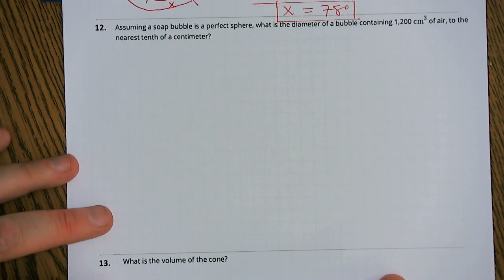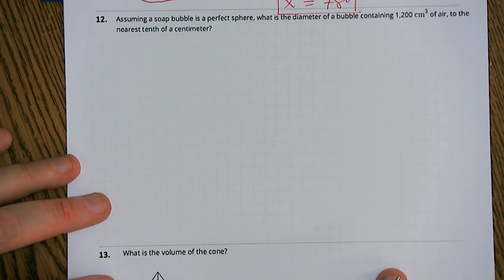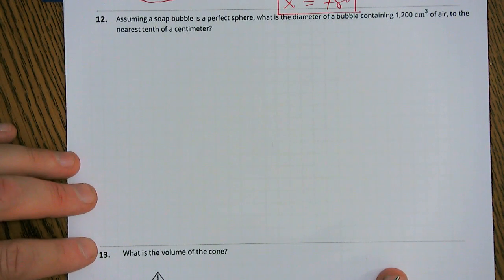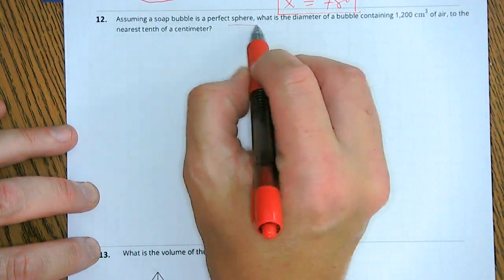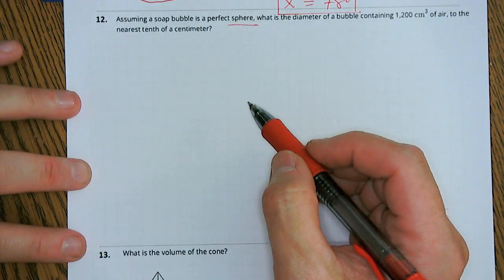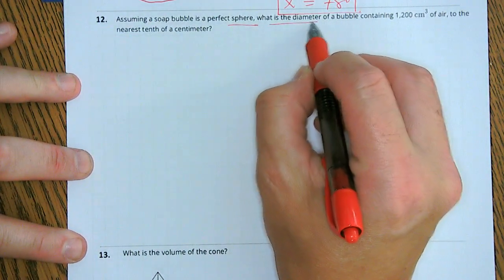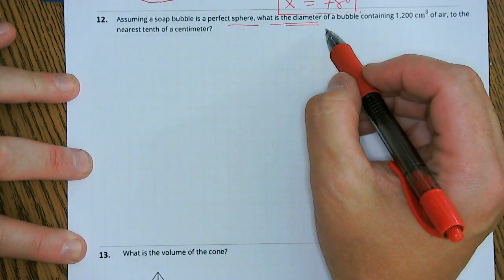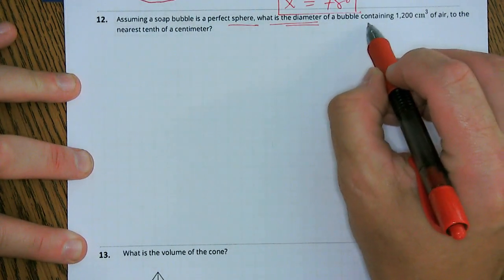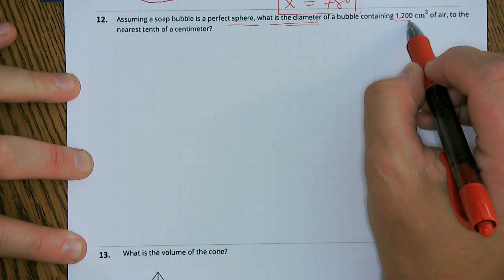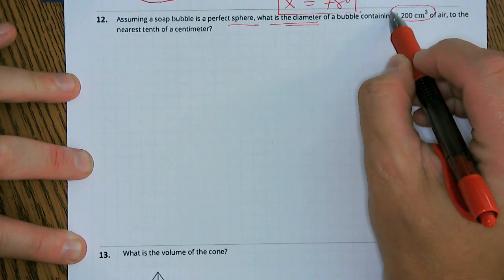All right, next one right here. So it says that assuming a soap bubble is a perfect sphere, what is the diameter? That's the question. What is the diameter of a bubble containing 1,200 cubic centimeters of air?